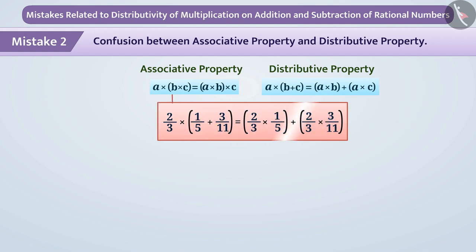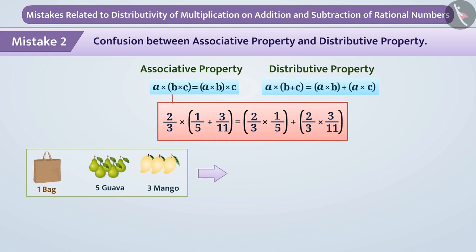Let's understand this mistake with a simple example. Suppose 5 guava and 3 mangoes are kept in one bag and if there are 7 such bags, what will be the total number of fruits?